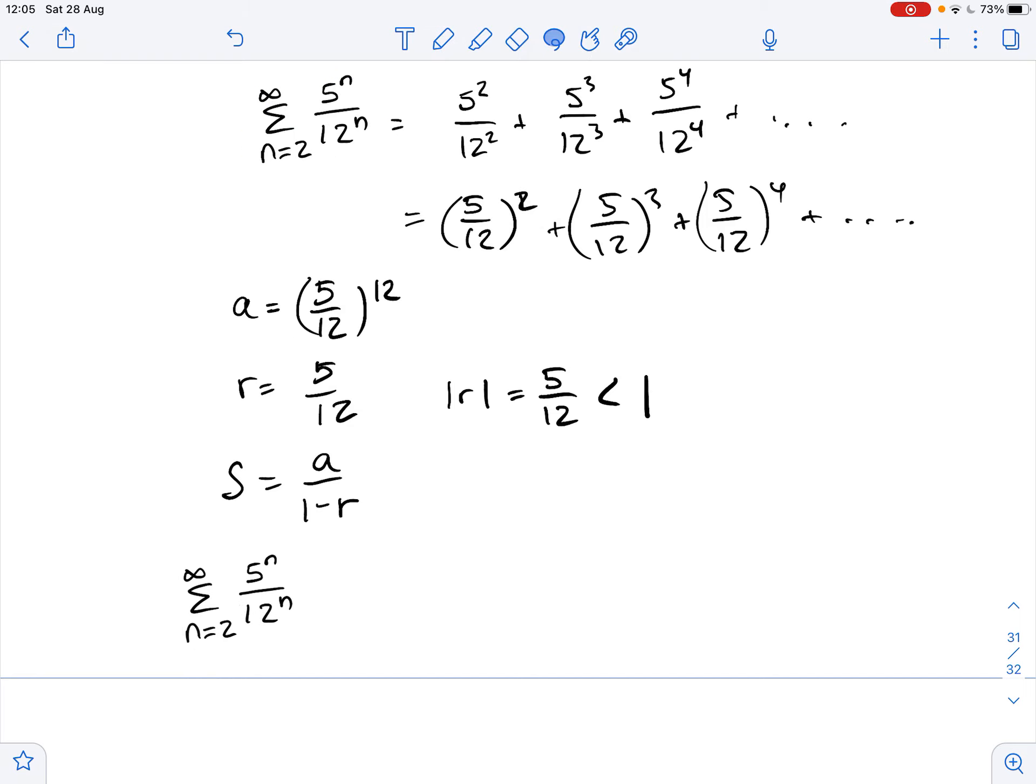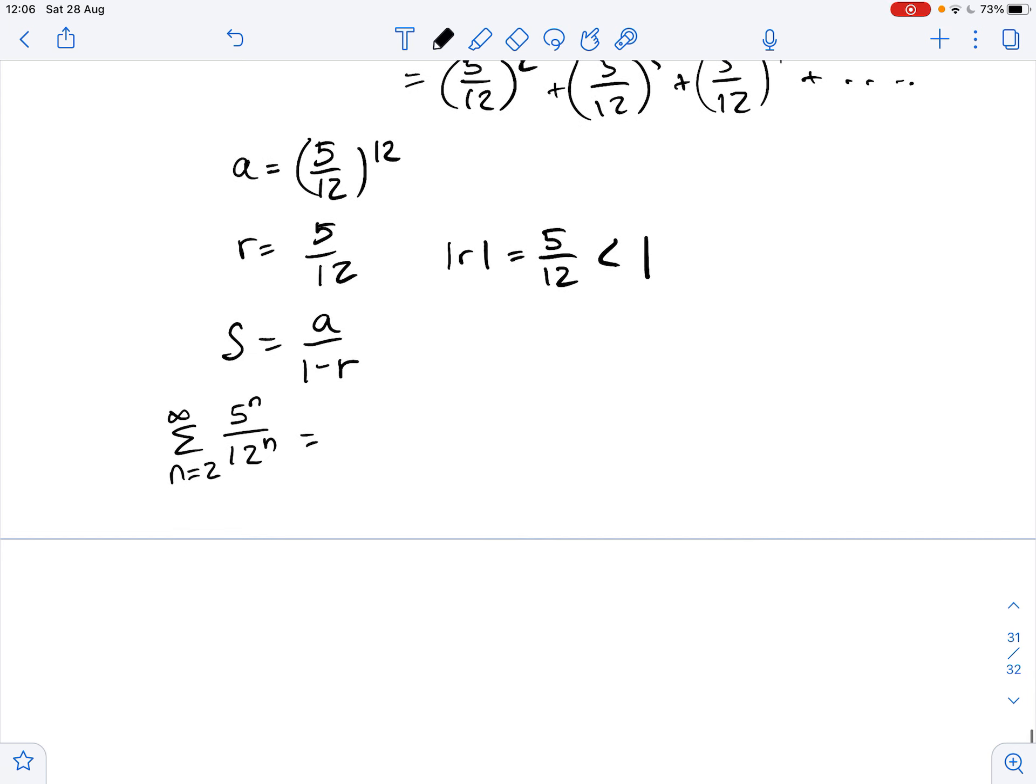So that means that the sum of our series equals 5 squared over 12 squared divided by 1 minus 5 over 12. This equals 25 over 144 multiplied by 12 over 7, and this equals 25 over 84.